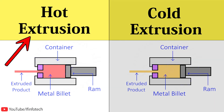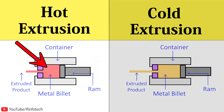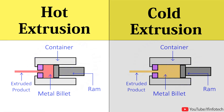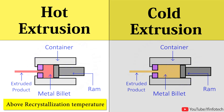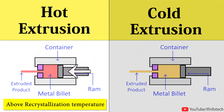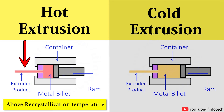Hot extrusion is a metal forming process of shaping a metal billet by forcing it through a die opening. This process takes place above recrystallization temperature. Due to this temperature, the hydraulic driven ram easily presses the metal billet and metal starts to flow through an opening, forming a structured product of required cross section.